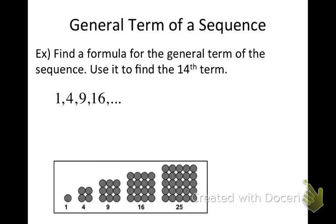I called these square numbers, and remember the picture for triangular numbers? Here's a picture for square numbers: we can make squares where each side is the length of the term number. So the fifth term is a square with 5 dots along each side, and there's a total of 25 dots. Kind of a cool thing.